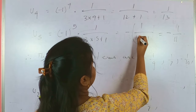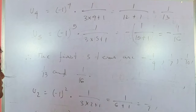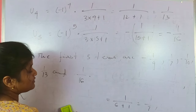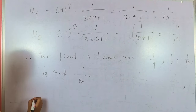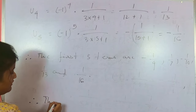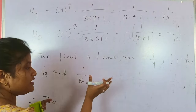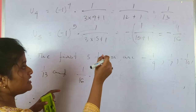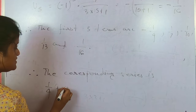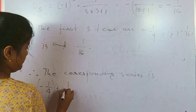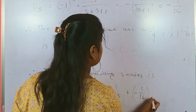The second part asks us to find the corresponding series. Since we have found the first 5 terms, the corresponding series is the addition of those terms: (−1/4) + (1/7) + (−1/10) + (1/13) + (−1/16). This is the corresponding series for this sequence.